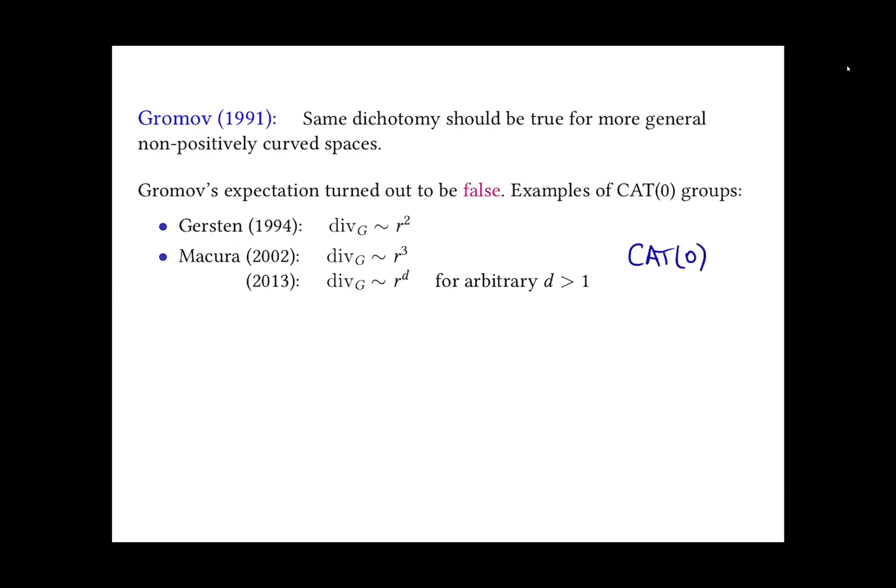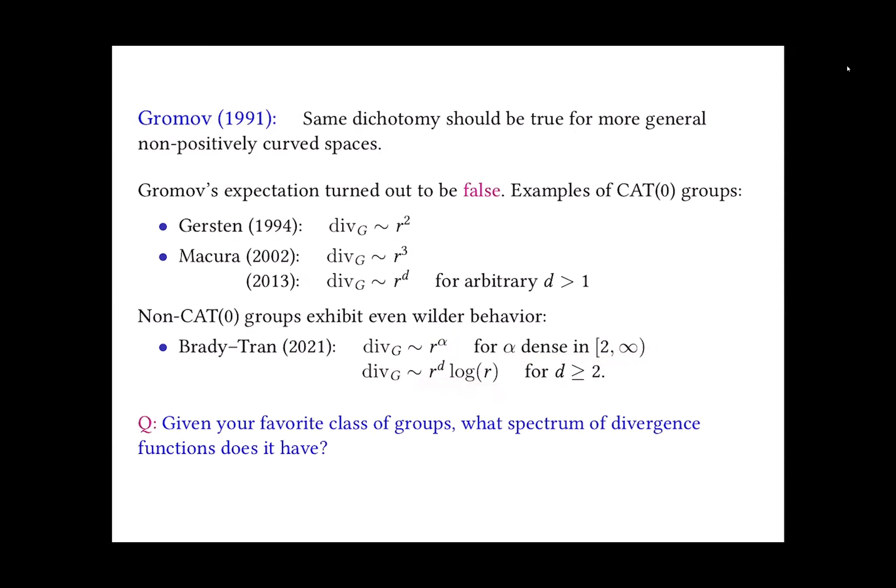First, it was Gersten, who came up with an example of a group with divergence of order R-square, polynomial R-square. And these examples are CAT(0), which means the triangles are not fatter than in Euclidean space. It's a natural generalization of hyperbolic and Euclidean space. Then, Natasha Macura came up with similar examples of cubic divergence and later with arbitrarily polynomial divergence, arbitrary degree divergence. I emphasize that these examples are CAT(0) spaces, which fall into the class of spaces Gromov was interested in. So, we see that divergence is an interesting invariant, which behaves slightly defying our expectations in the class of CAT(0) groups.